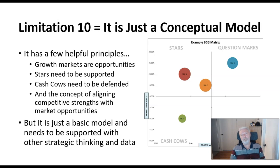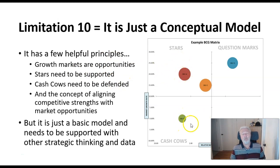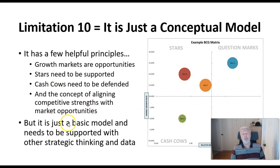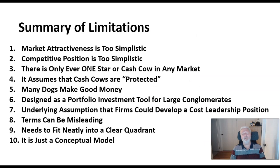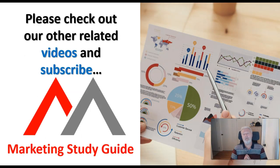Finally, the biggest limitation: it's just a conceptual model. There are helpful principles — growth markets are opportunities, stars need active support, cash cows need defending — and it helps connect competitive strengths with market opportunities, which is a key part of strategy. But beyond those teaching points, it is a fairly basic model with a whole bunch of limitations. Here's a summary of those limitations on screen. There are lots of other videos on the BCG matrix so please check them out, and please subscribe to the channel.